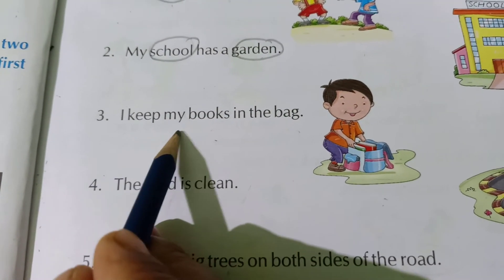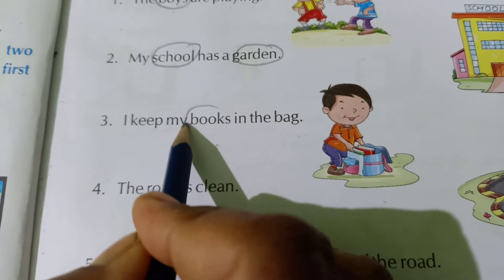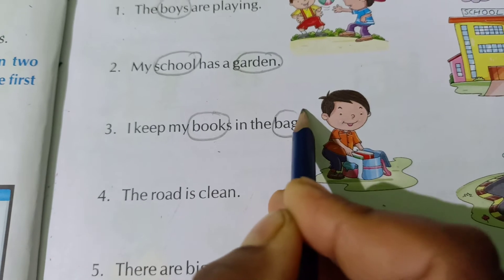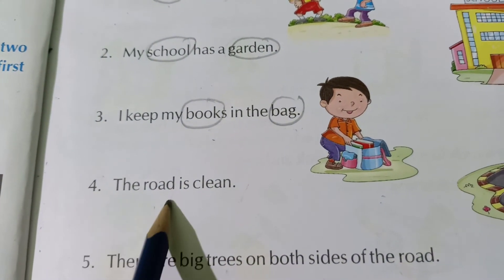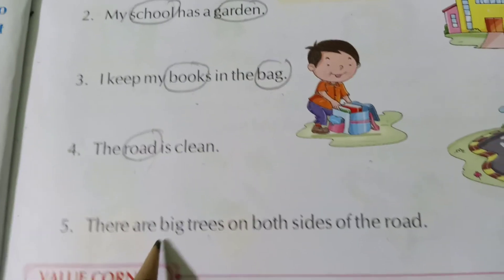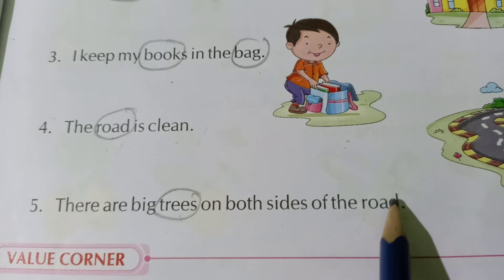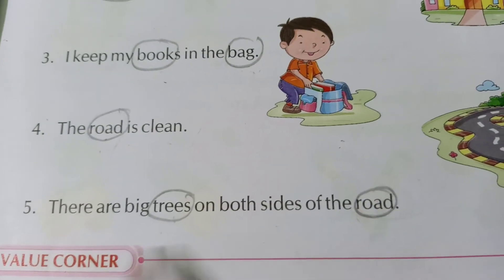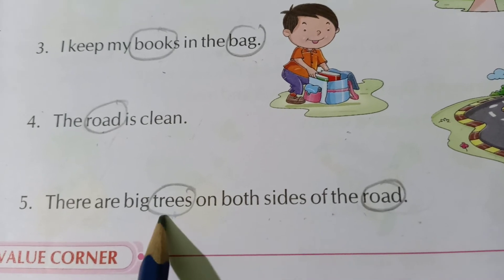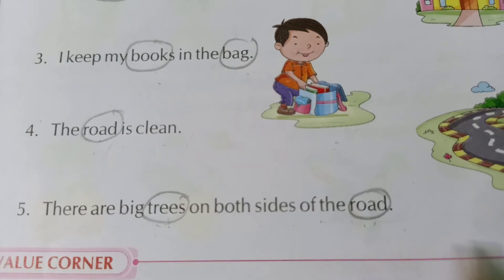Three: I keep my books in the bag — 'books' and 'bag' are common names, so circle them. Four: There are big trees on both sides of the road — 'trees' is a common name and 'road' is a common name, so circle both.